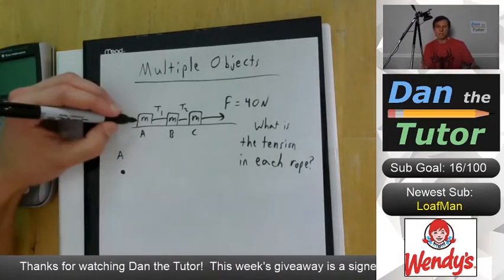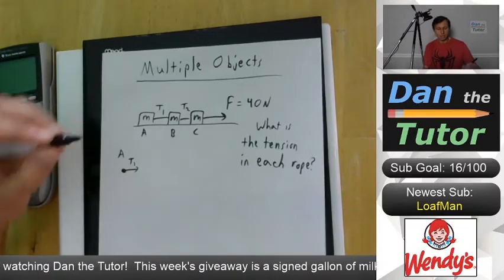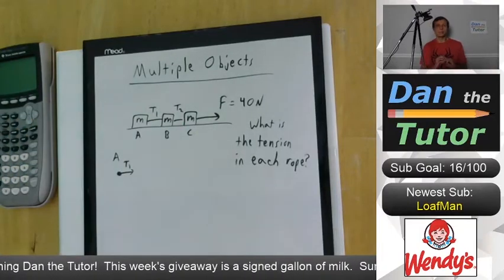So, what force is acting on box A? There's only one force. It's T1. The tension in rope 1 is going to be pulling mass A forward.